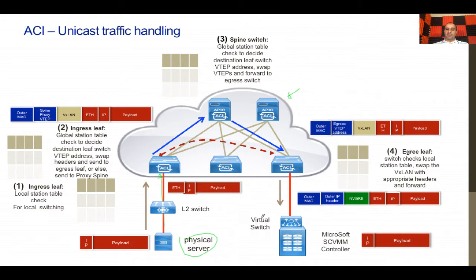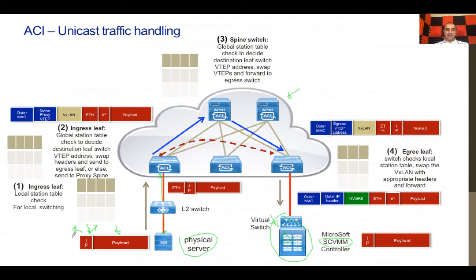On the other side there is a virtual switch in a controller — in this example a Microsoft SCVMM (System Center Virtual Machine Manager) controller hosting one VM that the server needs to communicate with. The server application sends a packet with a payload, IP header, source port, source IP, destination port, and destination IP. The destination IP is the virtual machine's IP address. This gets sent and the switch forwards it with Ethernet and VLAN headers as a trunk to the ACI leaf switch.